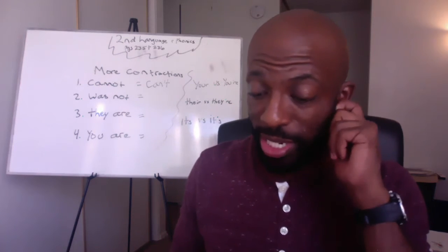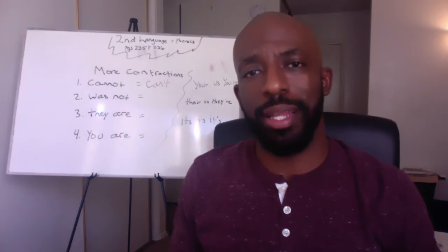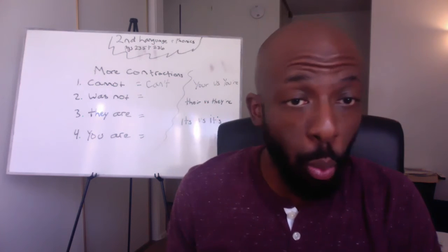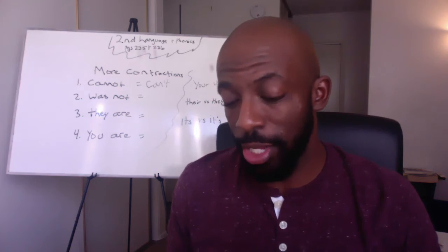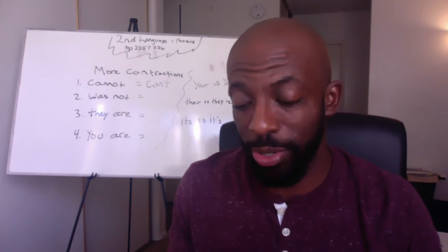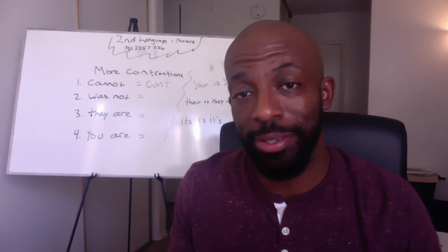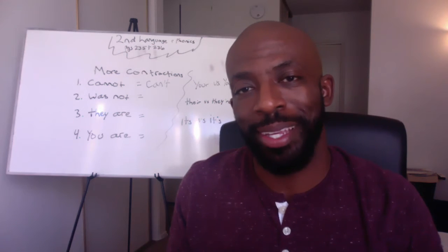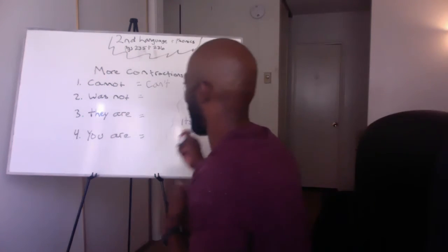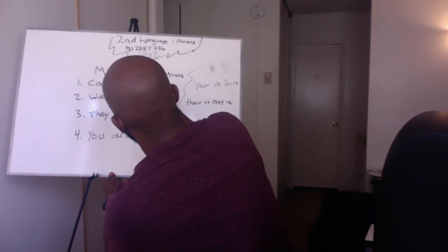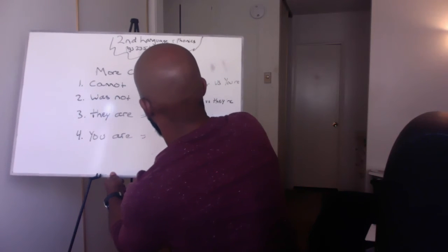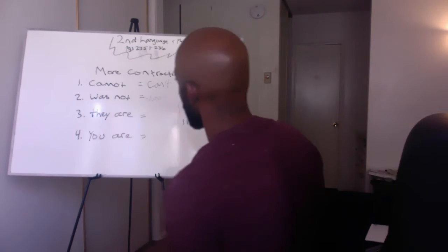Next one says 'was not.' I was not at school yesterday — or I wasn't. So we need to add an apostrophe. You're going to add W-A-S, then add an N, put an apostrophe, and then put the T. Wasn't. We're going to add that there.